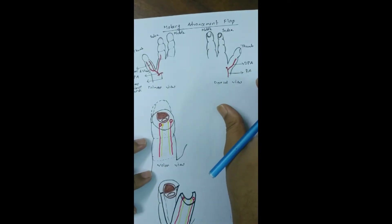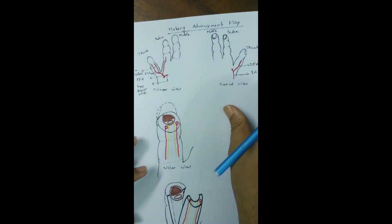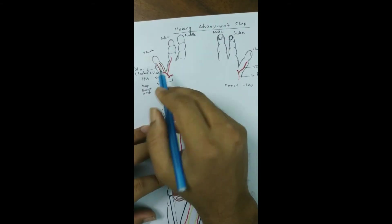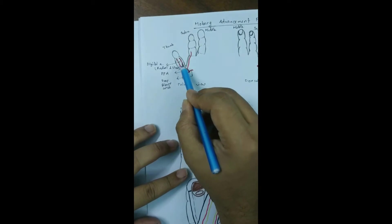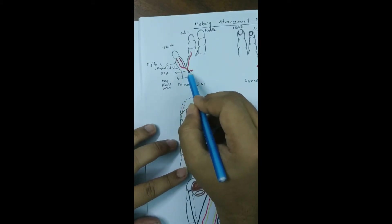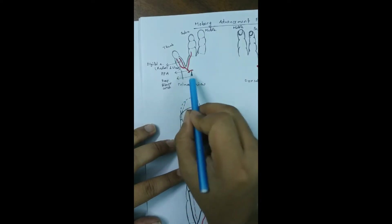The thumb is supplied by two digital arteries, the radial and ulnar digital arteries. They arise from the princeps pollicis artery, which is the terminal continuation of the radial artery that enters the palm through the first web space. It also receives contribution from the deep palmar arch and the superficial palmar arch.